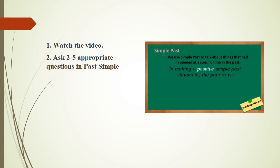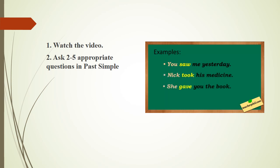We use simple past to talk about things that happened at a specific time in the past. In making a positive simple past statement, the pattern is subject plus verb in past form. Examples: You saw me yesterday. Nick took his medicine. She gave you the book. You, Nick, and she are the subjects in these sentences, while saw, took, and gave are the verbs. These follow the pattern of subject plus verb. The verbs saw, took, and gave are in the past forms.